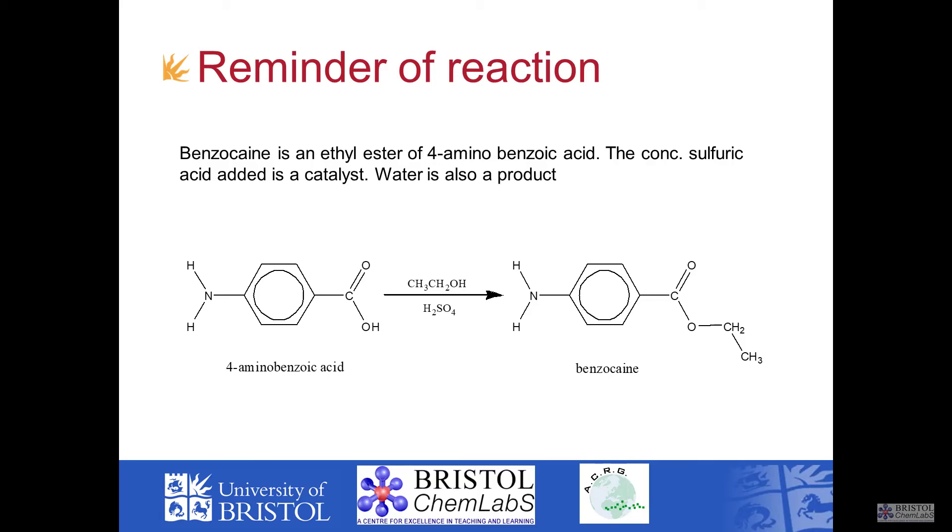So we have weighed out our starting materials on which we're going to base our percentage yield calculations. We've heated up under reflux. We've removed the catalyst and separated out some of the other impurities by filtering out our insoluble product. We've dried it and we've analyzed it through thin layer chromatography, melting point and by infrared spectroscopy.